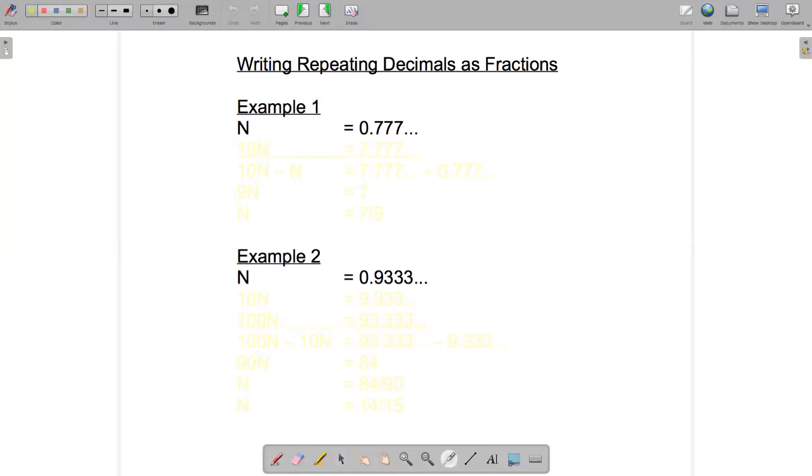So the first example I want to write this number 0.777777 the repeating decimal as a fraction. So the way to do this is to set up an equation n equal to your repeating decimal.